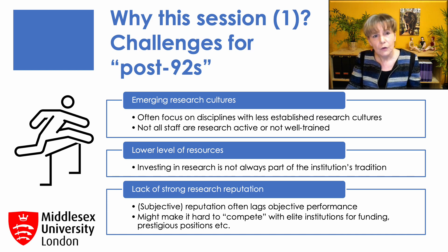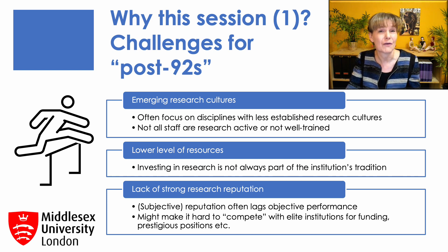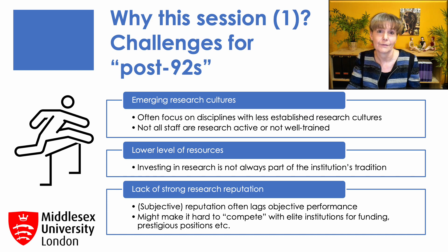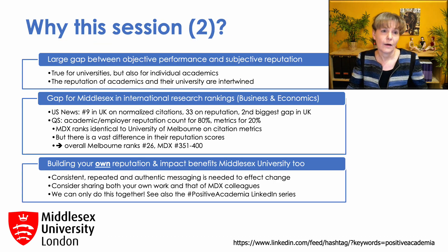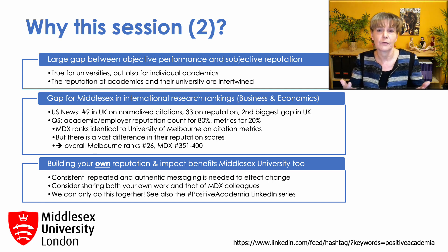This can easily create a vicious circle as their lack of reputation may make it harder to compete with elite institutions for scarce resources such as research funding, positions on research councils or other prestigious positions in the higher education sector. You can nurture and develop emerging research cultures into strong, supportive and inclusive research cultures as we have done at Middlesex University. However, changing an institution's reputation is a long and very difficult process, especially in a higher education system that is as stratified as the UK. Because reputation lags behind objective performance, most non-elite institutions experience a large gap between their objective research performance and their subjective reputations.